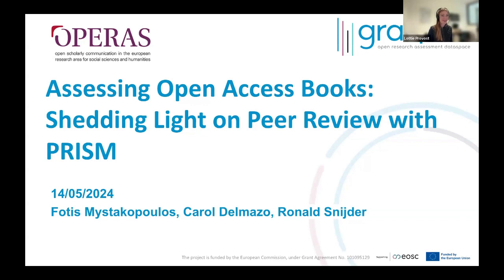I'd like to welcome today's speakers: Carol Delmazo and Fotis Mistakopoulos for OPERAS, and Ronald Snyder from the OAPEN Foundation. Today our topic will be about assessing open access books and shedding light on peer review with PRISM — the Peer Review Information Service for Monographs. In this webinar, we'll talk about what peer review means in relation to responsible research assessment, how PRISM works, how it helps increase transparency in peer review for open access books, and how PRISM could be useful in the context of responsible research assessment.